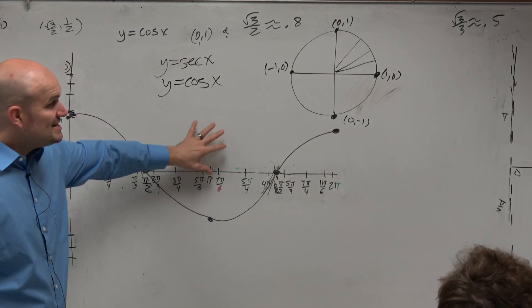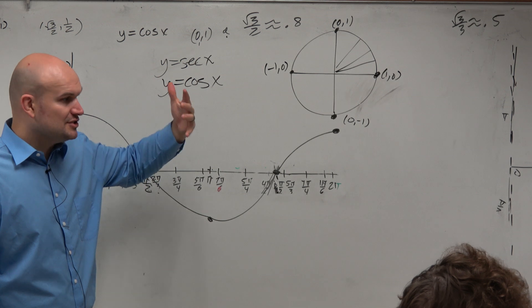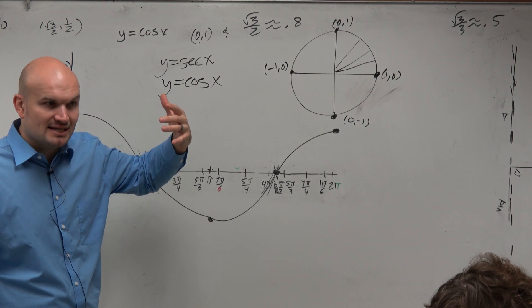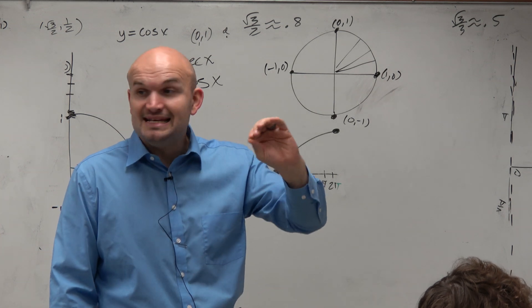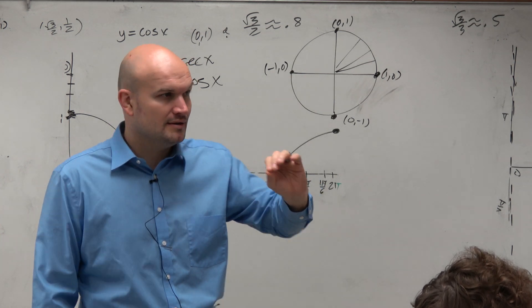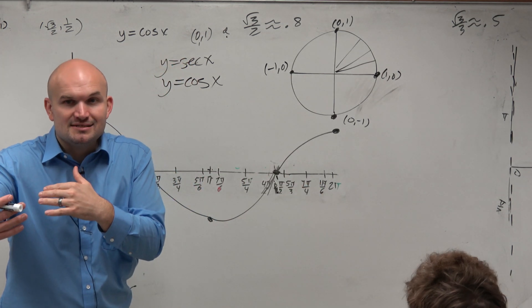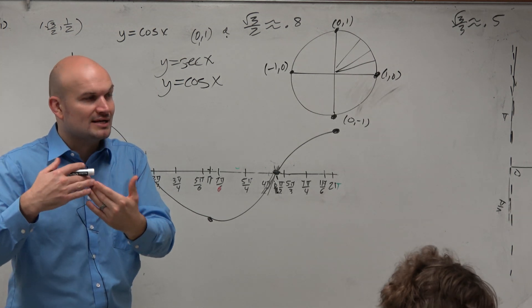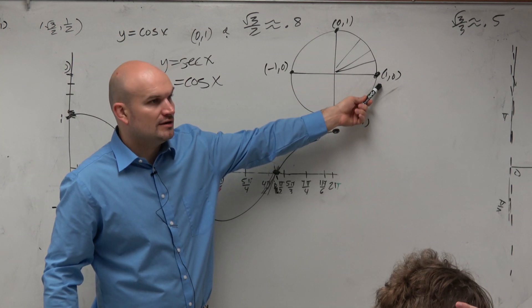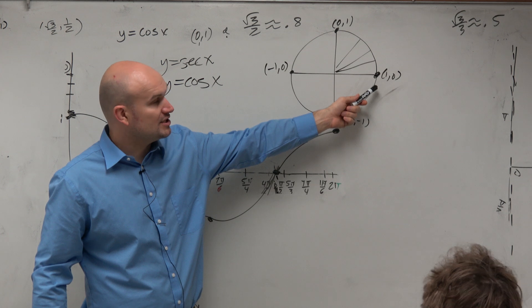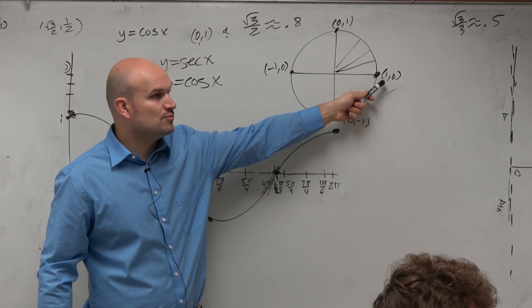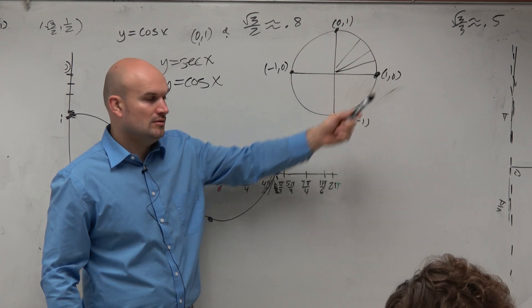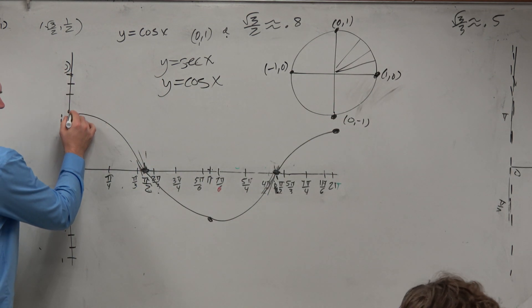So based on this information, we can actually now start to develop some things about secant. Because remember, secant is just the reciprocal of cosine. So instead of doing x, now let's do 1 over x. So for the secant of 0, that's 1 over 1, which is 1. So we're going to have a shared point.